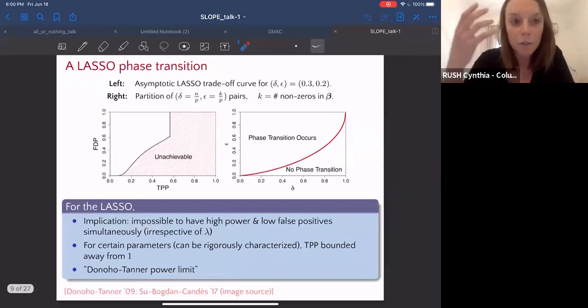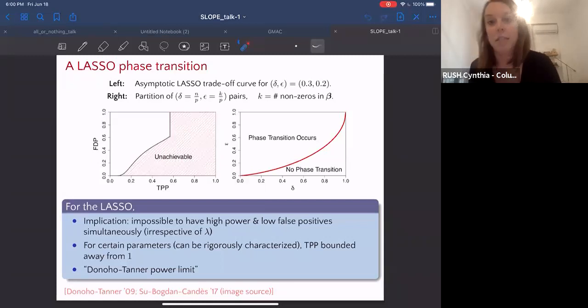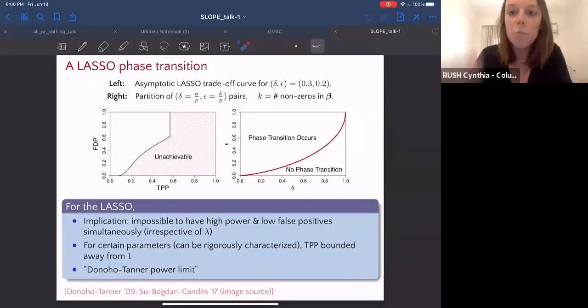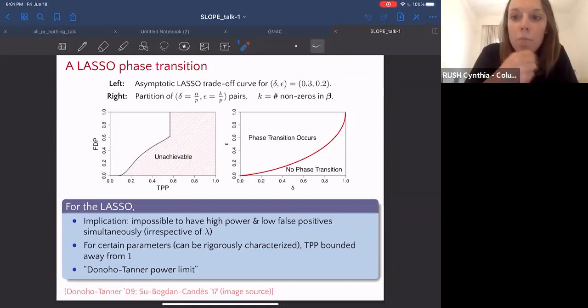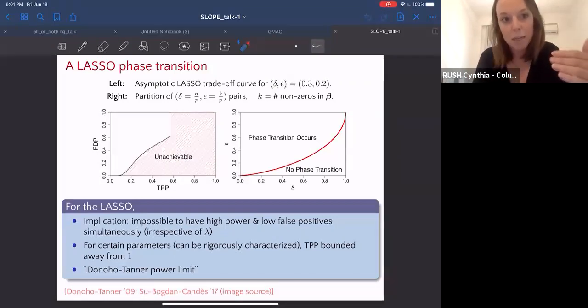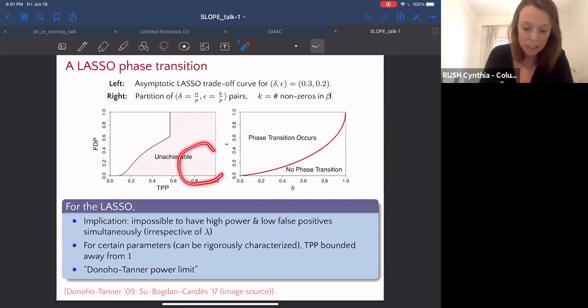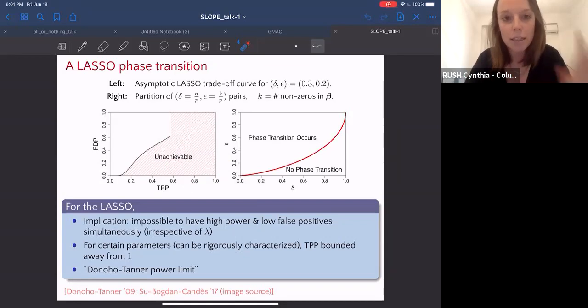Formally, if we're talking about the lasso, the work that Weigu did in his dissertation computes an exact boundary curve that separates achievable FTP, TPP pairs from those that are impossible to achieve by the lasso, no matter what the signal to noise ratio is in the problem and no matter what regularization parameter you use. Obviously, what we'd like is for the FTP to be low—low false discoveries—and high TPP, high true positives. This is the region of the FTP TPP plane that we'd like to hit, but this work shows that this whole favorable region can't be reached by the lasso.